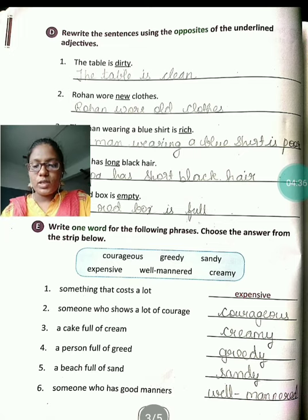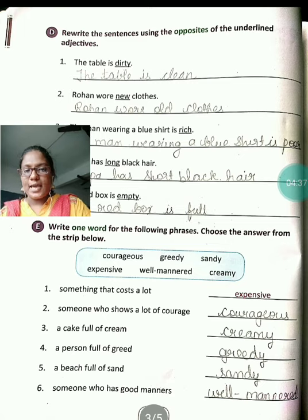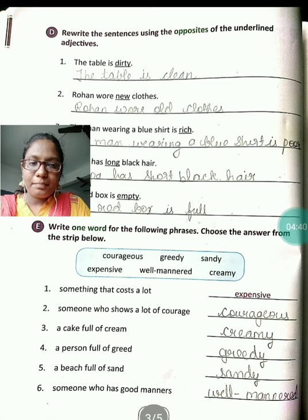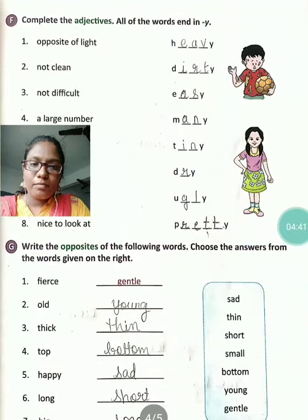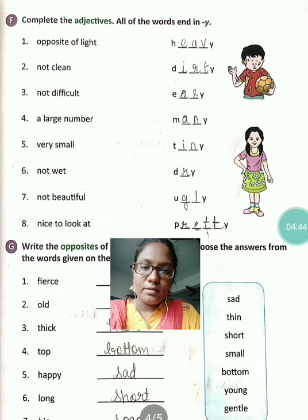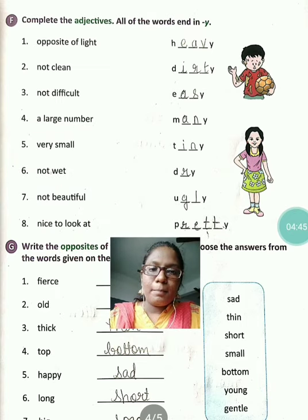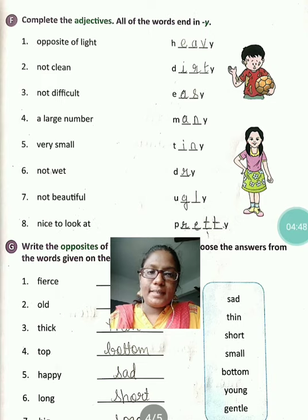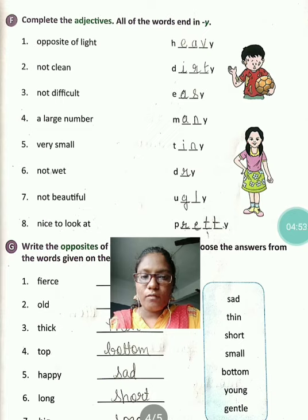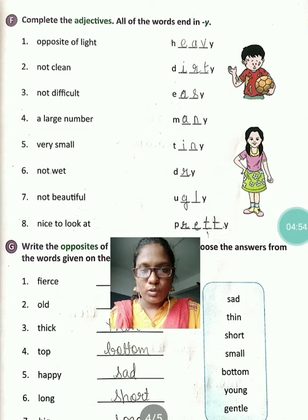Now we'll go to the next exercise, that is F. Here you can see: complete the adjectives — all of the words end in Y. Yahaan pe words jo hain, Y se end hote hain.